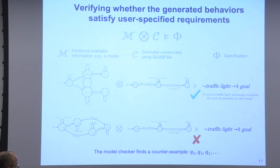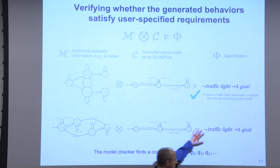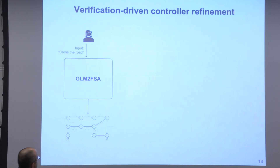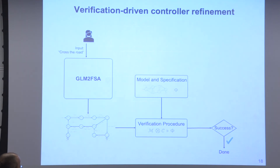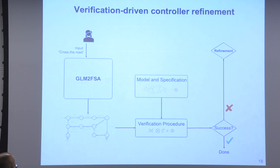It is easy to find cases where verification returns a counterexample, showing that given this view of the world and this extracted controller, the specification will not be satisfied — and here is one order of events that leads to trouble. The verification result motivates the next step: if the outcome is good, you are done. But if it is no, there is a question of how we can refine it.